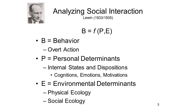The classic framework for the analysis of social behavior was provided by Kurt Lewin, a refugee from Hitler's Europe who settled in the United States in the 1930s and became a leading figure in American social psychology. Employing the language of mathematics, Lewin asserted that behavior is a function of personal determinants and environmental determinants acting together.